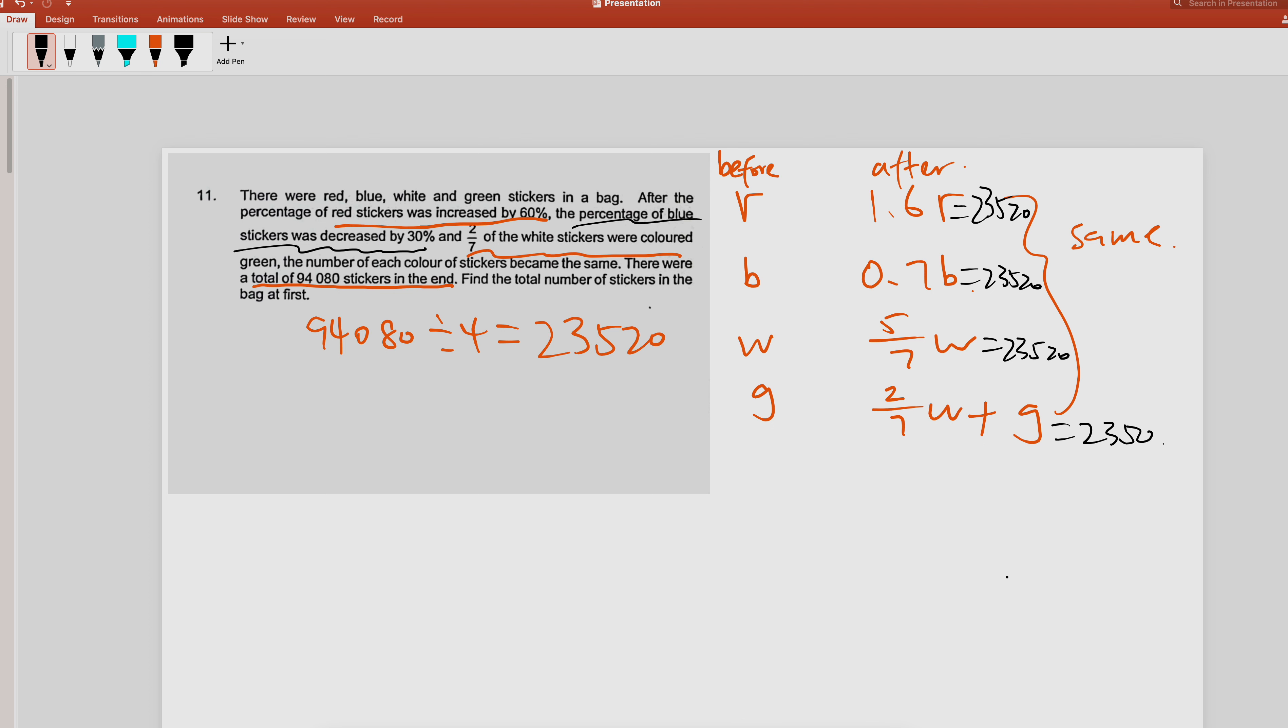So if you look at this, it's very easy for you to find the total number of stickers in the bag at first. To do this, you find out the rate. How do you find red? It's 2352 divided by 1.6, right? That's how you get red.